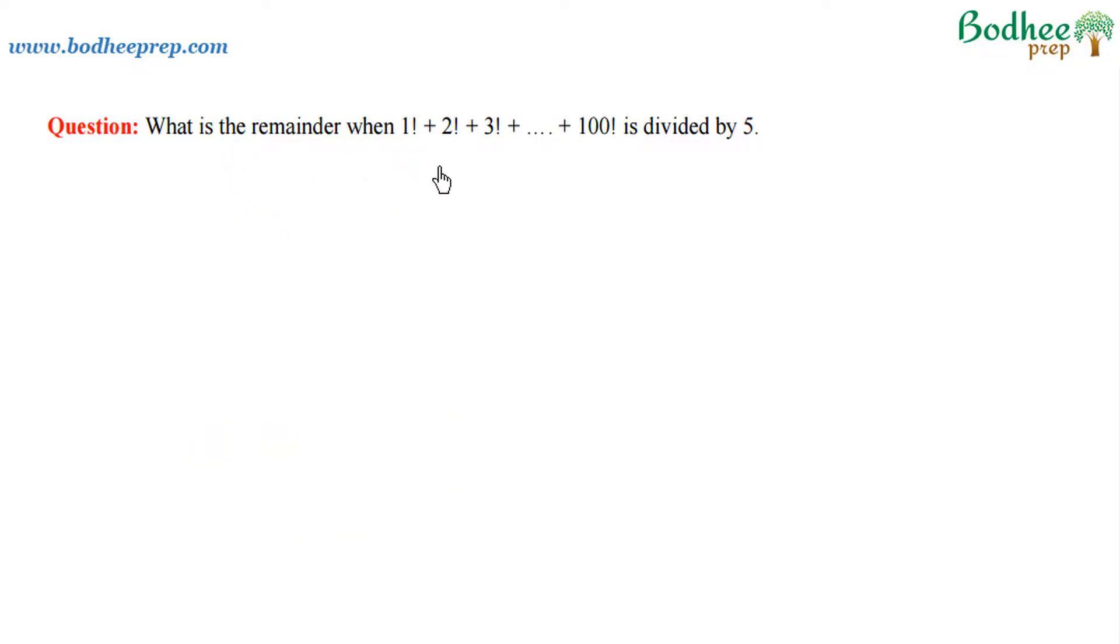Here the question is: we have to find the remainder when 1 factorial plus 2 factorial plus 3 factorial and so forth till 100 factorial is divided by 5.